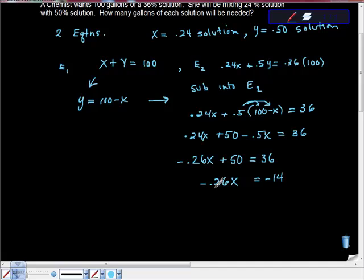I'm going to divide both sides by negative 0.26. Negative over negative is a positive. 0.26 over 0.26 is 1, 1 times X is X. And when we do this math, I used a calculator and got 53.85 gallons. And remember, we said X was the 24% solution.